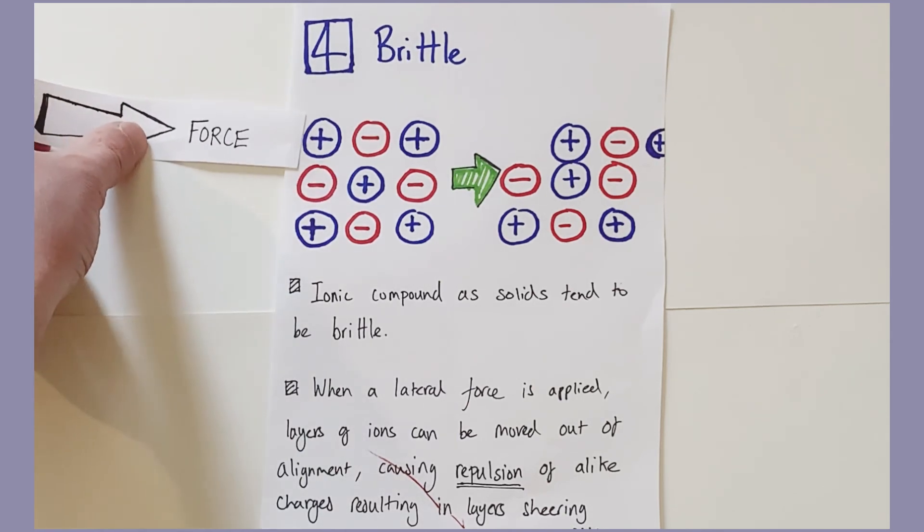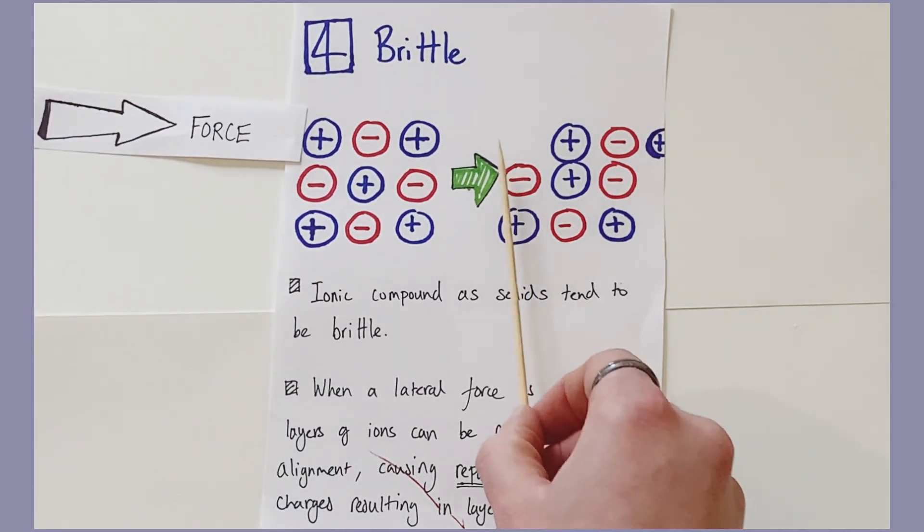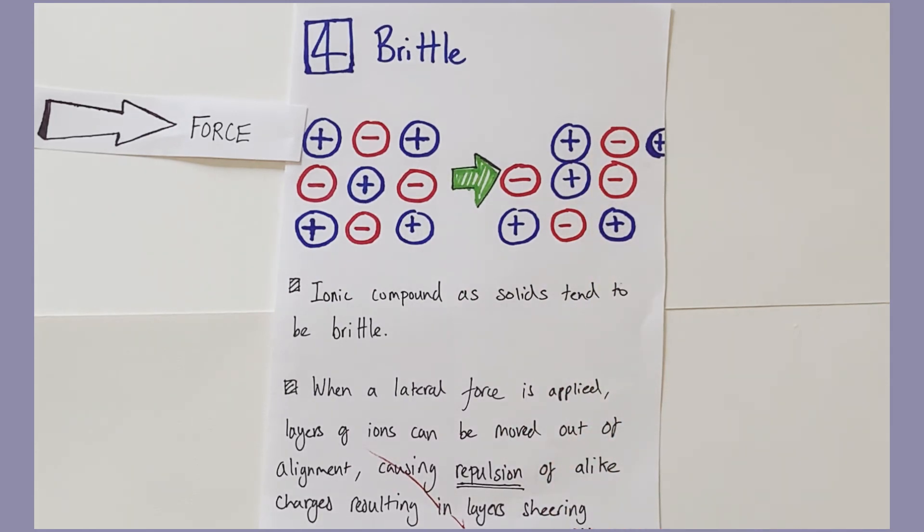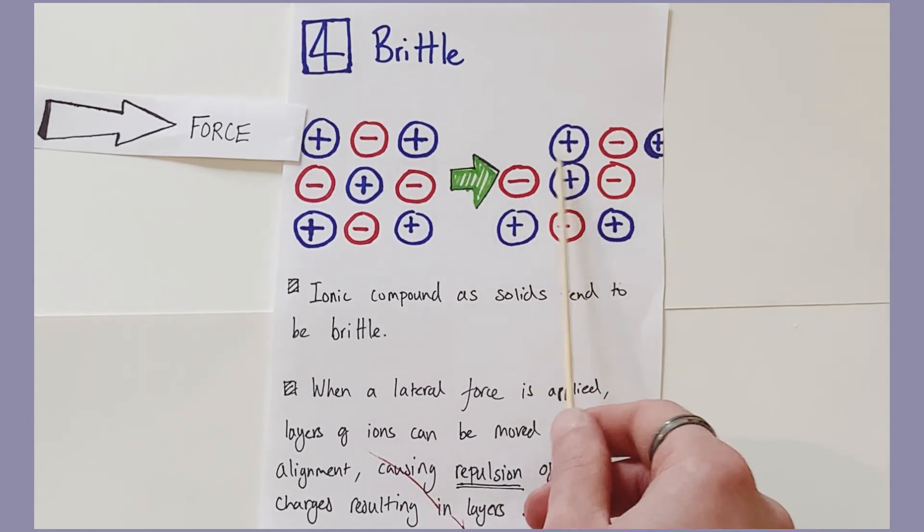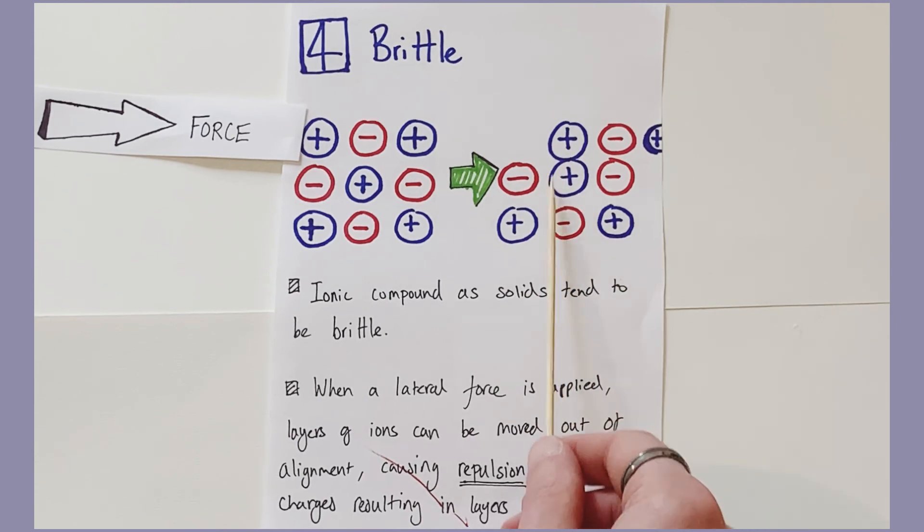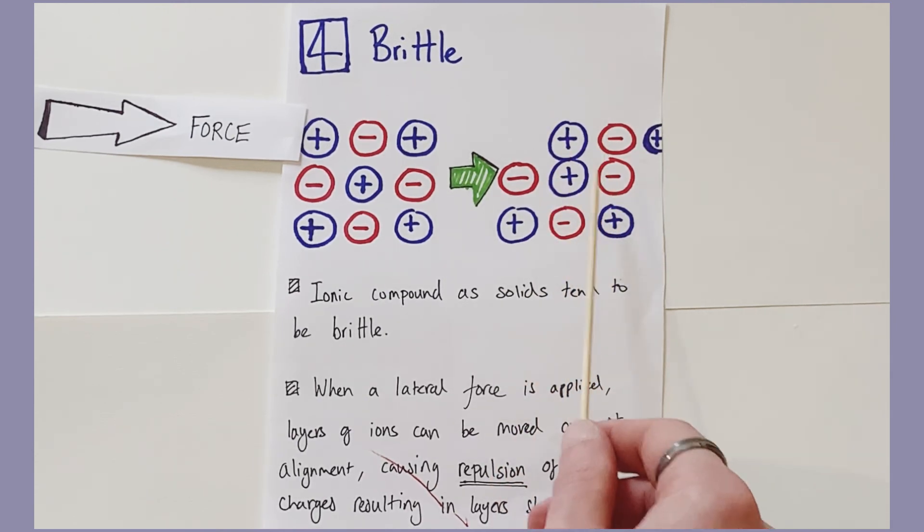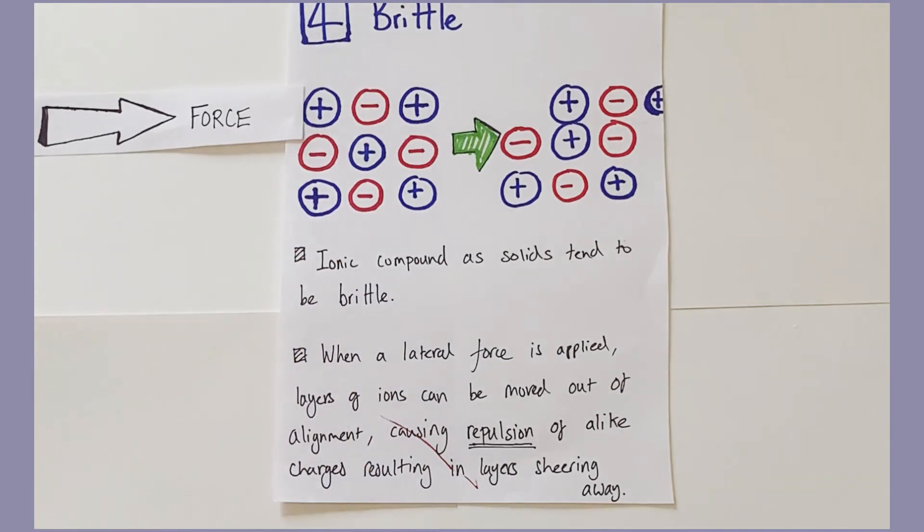This layer here, for example, you can see the result is it moves the layer across slightly. That's not very good for a giant ionic structure because you can see what happens is the misalignment of those layers causes two positive ions and two negative ions to be in much closer proximity. That increased repulsion of like charges will result in a shearing effect, a breaking away of those layers, and that hence will cause a shattering of the crystal structure itself and the brittle nature of ionic compounds.